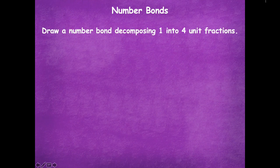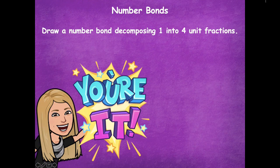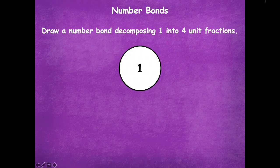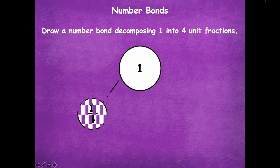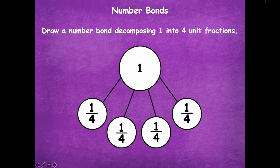Now we're going to draw a number bond decomposing one into four unit fractions. We're going to take one and split it into four unit fractions. If we're splitting into fours, what's our fractional unit going to be? Fourths. So you write your number bond using fourths. Pause the video, draw your number bond, and click play when you're ready. Here's mine: one as the whole, and then four unit fractions — one-fourth, one-fourth, one-fourth, and one-fourth. You can count those: one-fourth, two-fourths, three-fourths, four-fourths — which makes a whole.